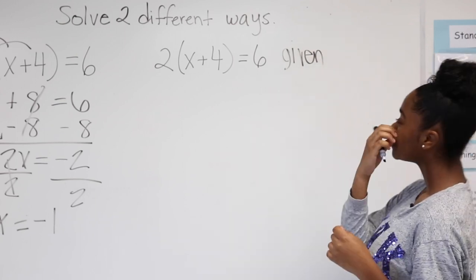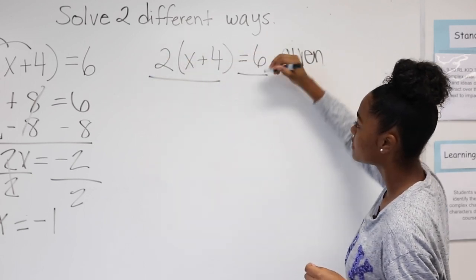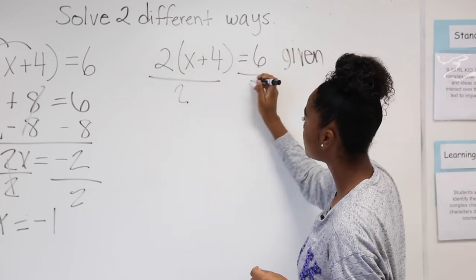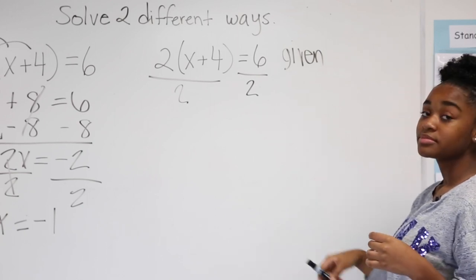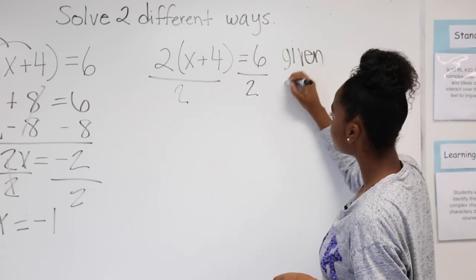So first, if you don't do it that way, it's another way. You're going to divide this by 2. You do on both sides. So that's your division property.